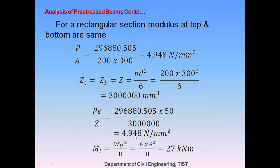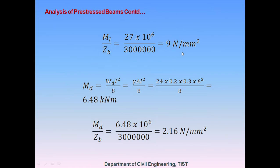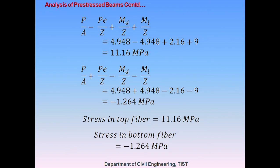Next, find ML/Z and MD/Z. ML = WL × L²/8 = 6 × 6²/8, giving ML/Z = 9 N/mm². MD = WD × L²/8, where WD = density of concrete × area = giving MD = 6.48 kNm, and MD/Z = 2.16 MPa. Substituting all terms into the eccentric tendon equations: top fiber stress = P/A − PE/Z + MD/Z + ML/Z = 11.16 MPa (compressive); bottom fiber stress = P/A + PE/Z − MD/Z − ML/Z = −1.264 MPa (tensile). Thank you.